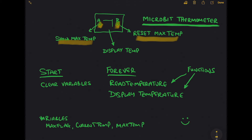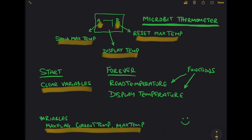Press button B and we're going to reset the maximum temperature. Under normal circumstances we're going to display the temperature. When the code starts we want to clear the variables — we do have three variables that we're going to be using here.